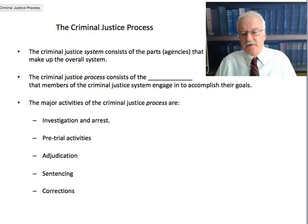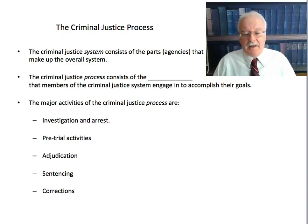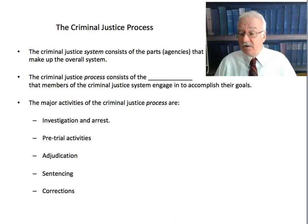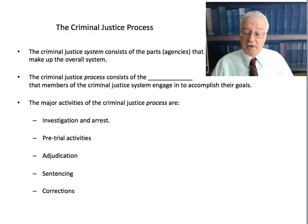The criminal justice system consists of the parts or agencies that make up the overall system — the police, the courts, probation, corrections, and parole — which we covered in Part 1. However, the criminal justice process is different. The process consists of the activities that members of the criminal justice system engage in to accomplish their goals. These major activities are investigation and arrest, pretrial activities, adjudication, sentencing, and corrections.